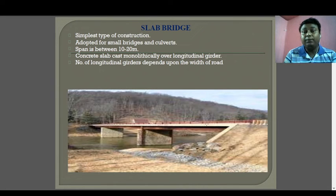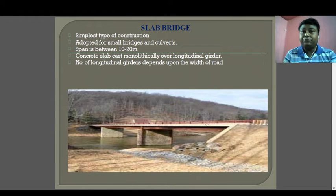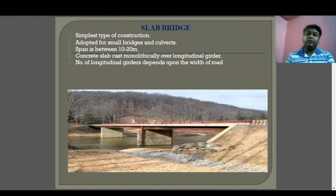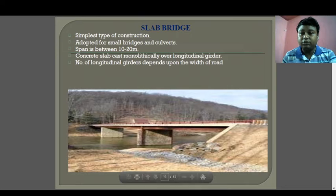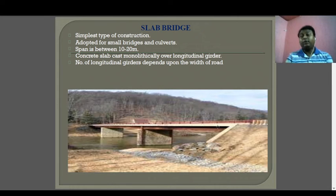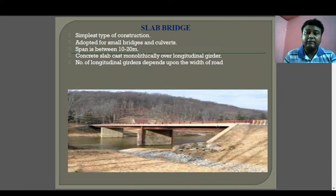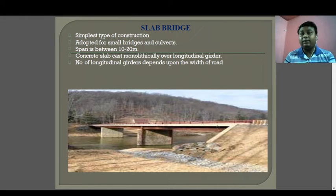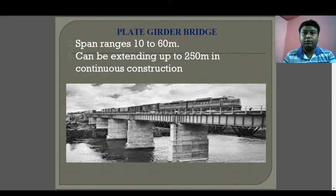The slab bridge is the simplest type of construction, adapted for small bridges and culverts with span between 10 to 20 meters. A concrete slab is cast monolithically over longitudinal girders. The number of longitudinal girders depends on the width of the road. The width of the road depends on the number of vehicles or traffic movement. Ultimately, bridges are designed based on traffic load conditions — the number of vehicles — to calculate the total load coming on the surface.